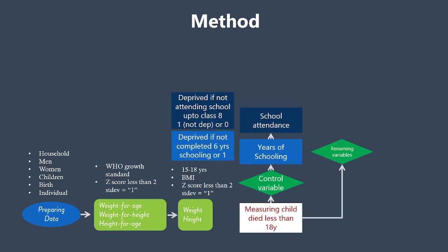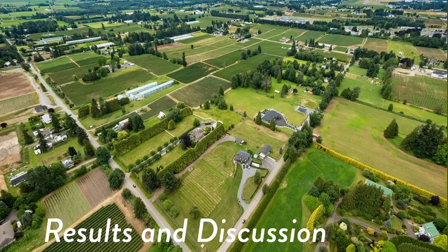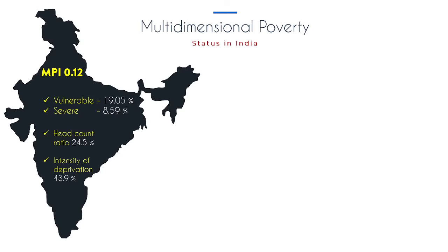The methods used for calculating the MPI are based on secondary data. The software used includes different geo-informatic tools, Stata, and Microsoft Power BI for data visualization.